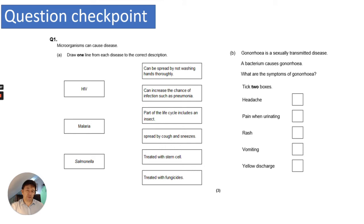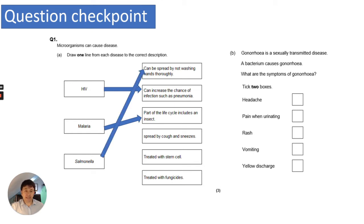Question one is a foundation tier question asking you to draw one line from each disease to the correct description. HIV can increase the chance of infections such as pneumonia. Malaria — part of the life cycle includes an insect. Salmonella can be spread by not washing hands thoroughly.